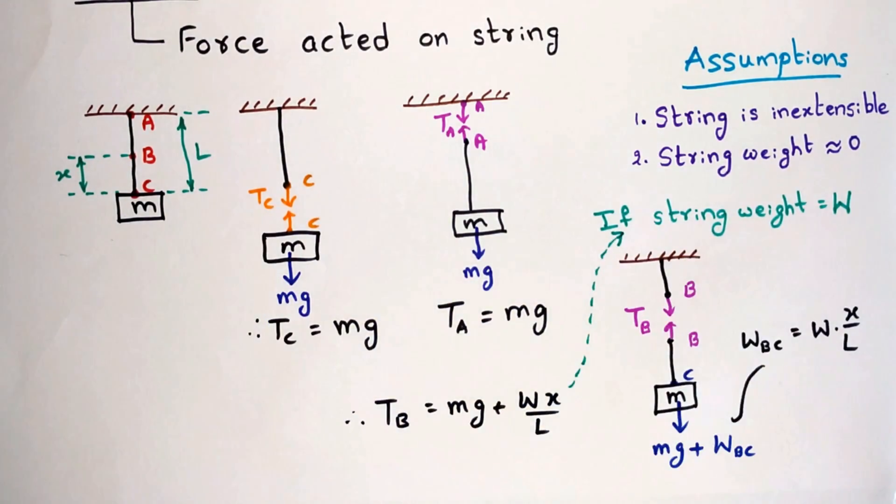So if the string weight is not negligible, this relation gives tension at any distance x from mass m. Thus the maximum tension will be at point a. But for simplicity we consider the string weight as 0 and the tension is uniform over the string.